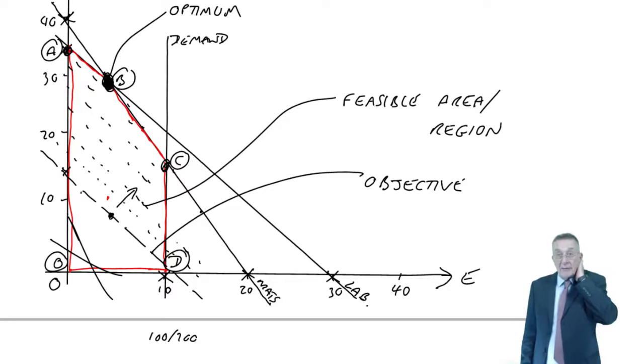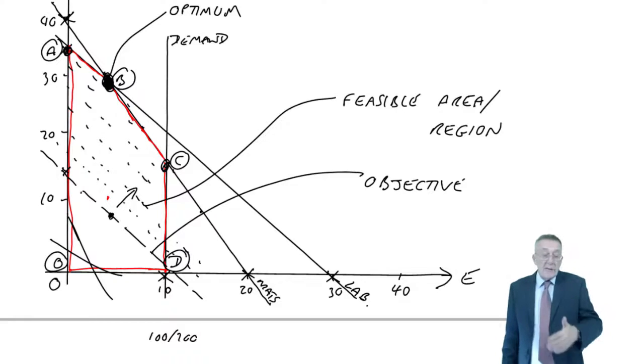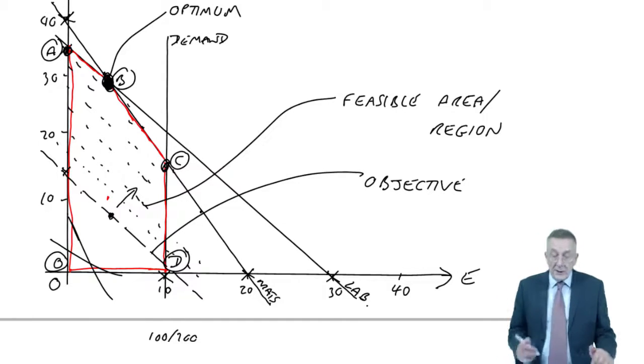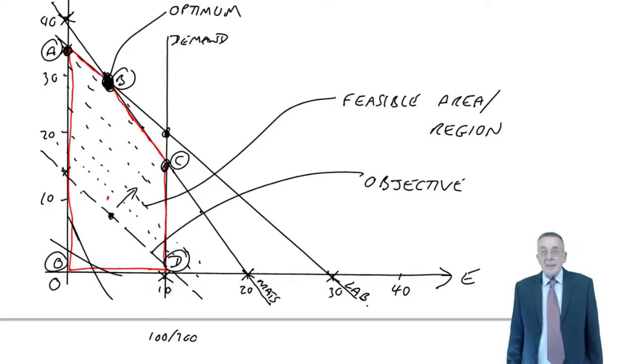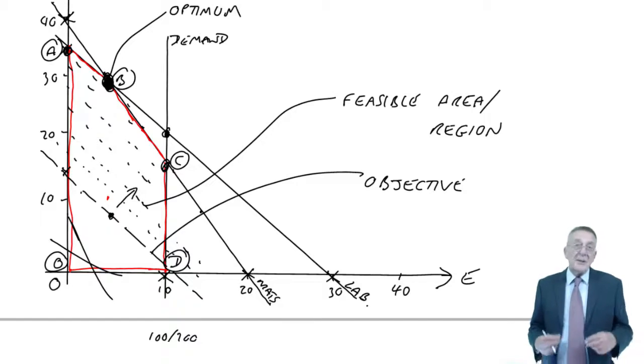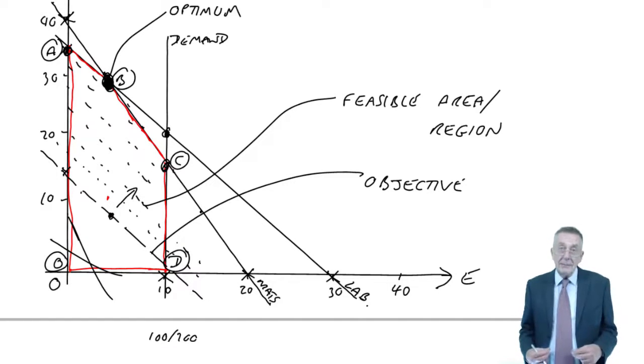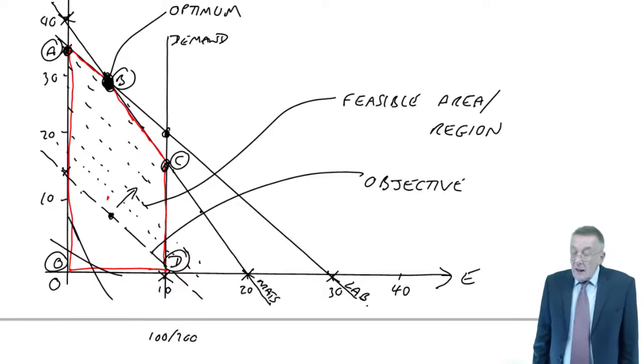The second is, that if you didn't draw a graph and just checked where all the lines crossed, you'd be including that point as well. And without the graph, you wouldn't realise that that point wasn't even a possible point, whether the profit there was higher or low or irrelevant.